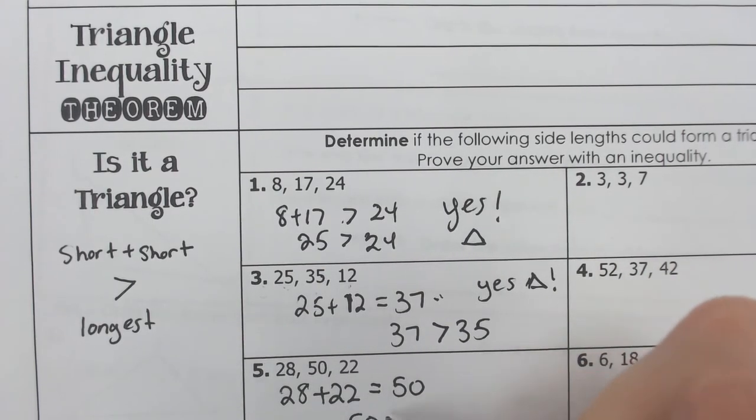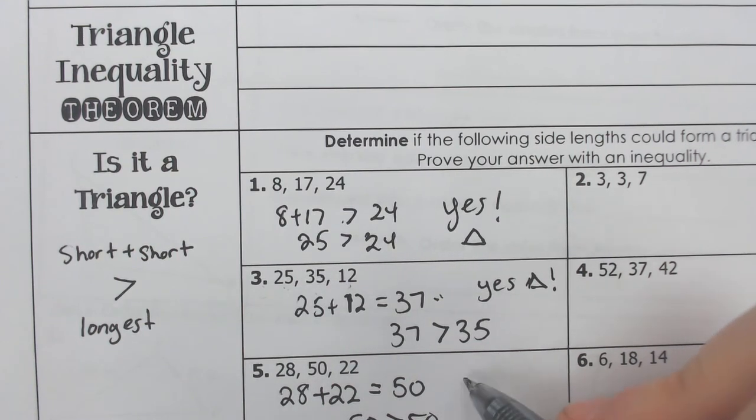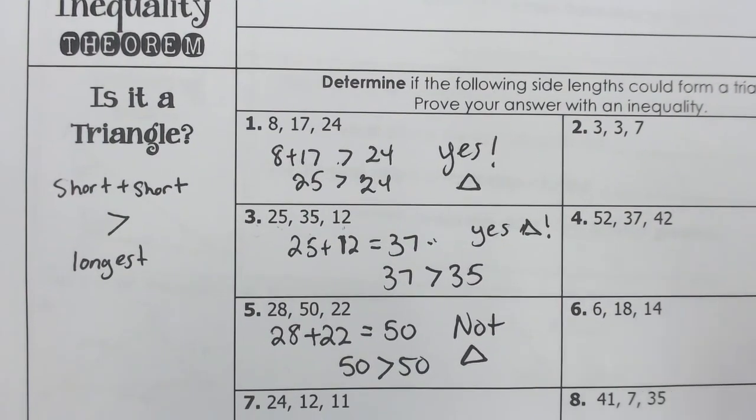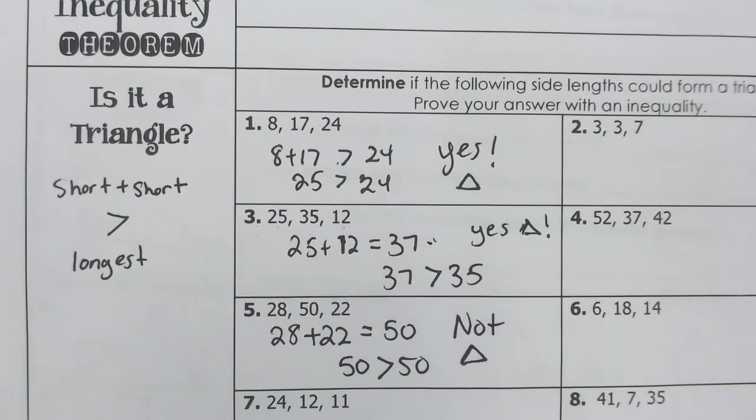50 is not greater than the biggest side, 50. Even though it's equal to it, this is still no, not a triangle. It's not possible for that to be a triangle. And therefore, we don't have a triangle here. It's not possible.